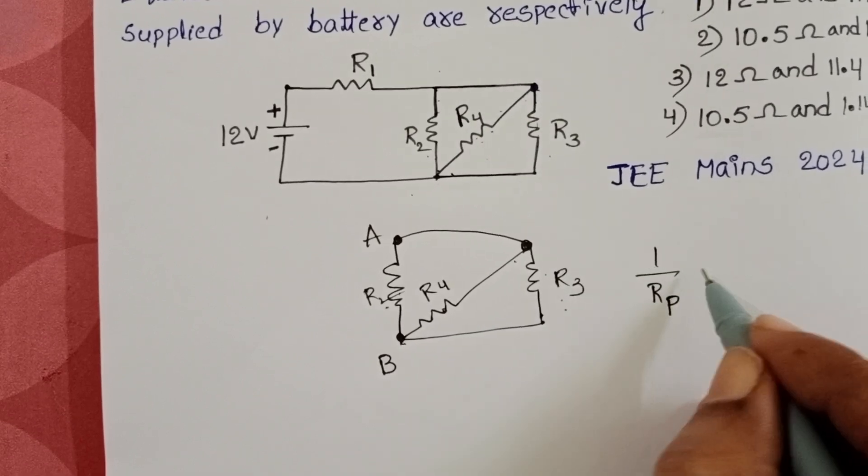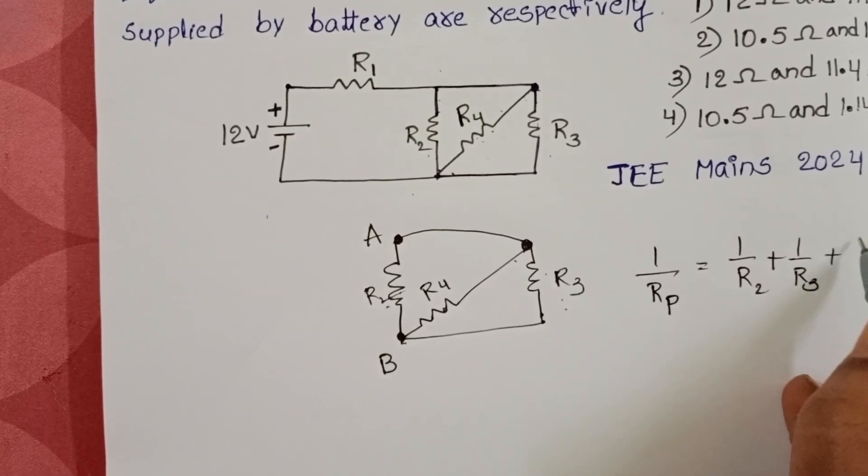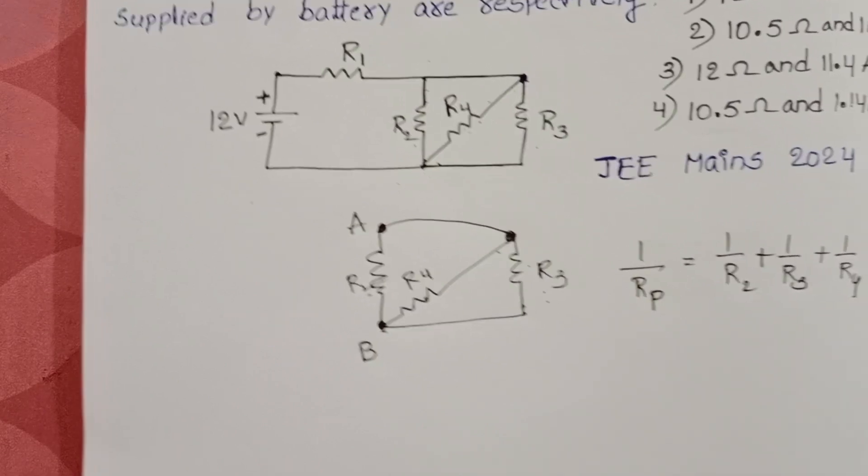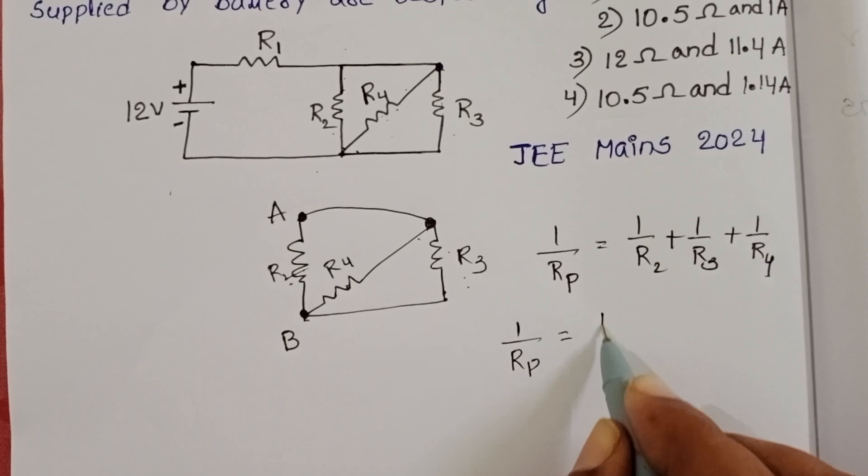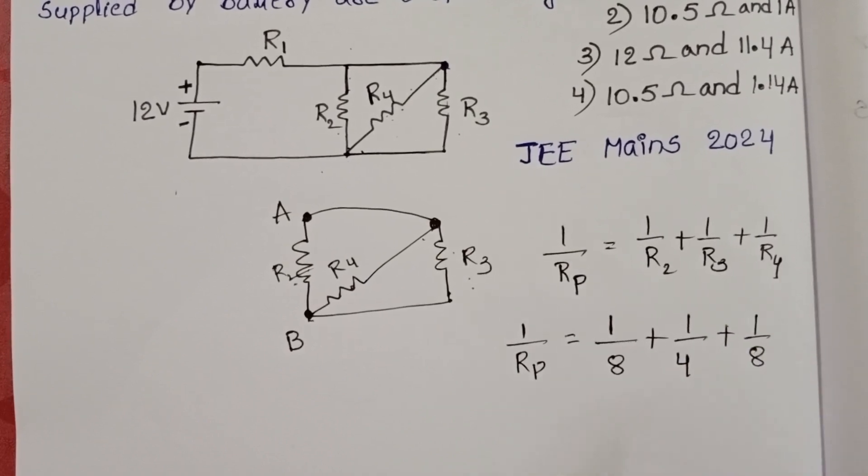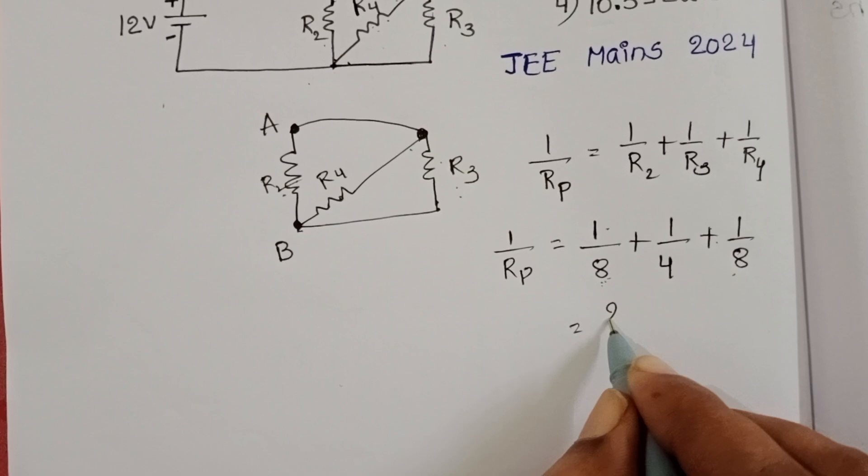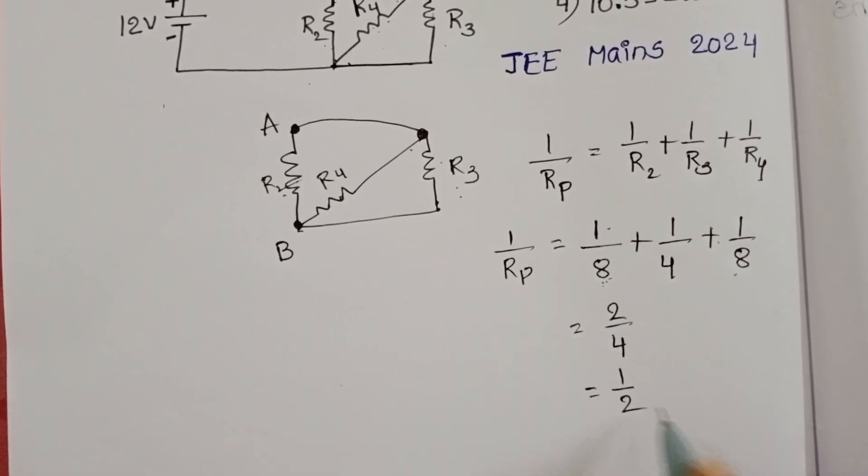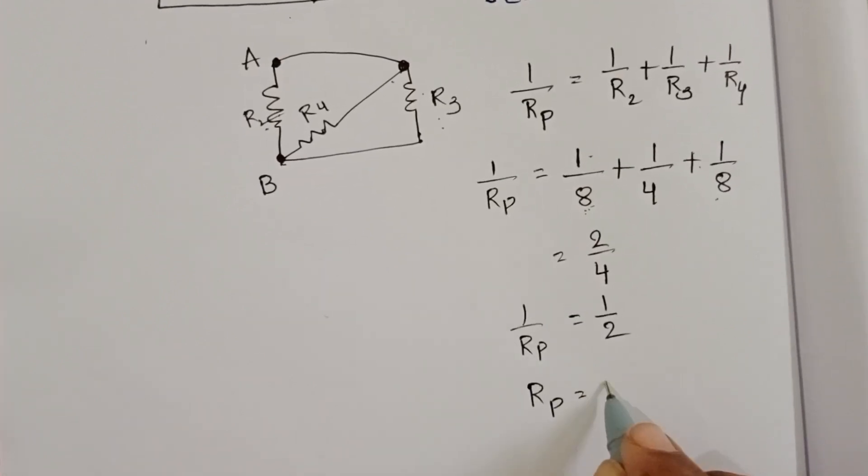That is why 1 by Rp equals 1 by R2 plus 1 by R3 plus 1 by R4. The resistances are R2 equals 8 ohm, R3 equals 4 ohm, and R4 equals 8 ohm. So we calculate: 1 by R2 plus 1 by R4 gives 2 by 8, and 1 by R3 gives 2 by 8, totaling 4 by 8 or 1 by 2. From this, Rp equals 2 ohm.